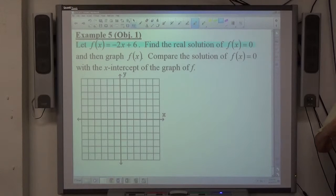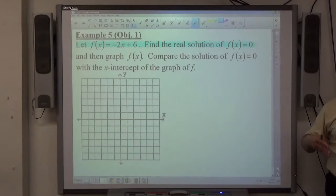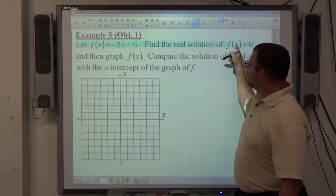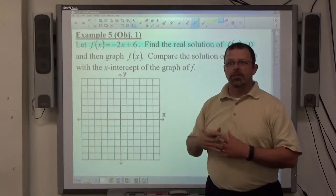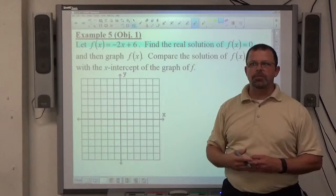You might recall from Friday when I was going through example 4, we were supposed to find the value of x in the domain of f of x such that f of x equals some number. That's what they're asking you to do there. They want f of x to equal 0 given this function f of x. So they want to find out what values of x make that true.